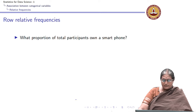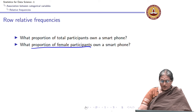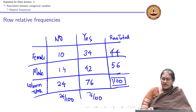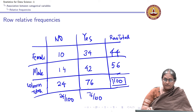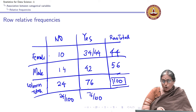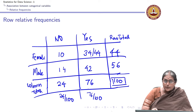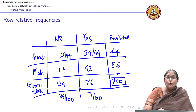Let me modify this question and ask: what is the proportion of female participants who own a phone? There are 44 female participants in total, of which 34 own a phone. So the proportion of female participants who own a phone is 34 divided by 44. Similarly, 10 by 44 is the proportion of female participants who do not own a phone.